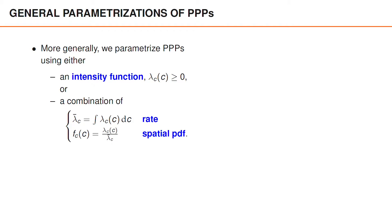From these equations, we can see that we can compute the rate and the spatial pdf from the intensity function. However, the intensity function can also be computed from the rate and the spatial pdf by multiplying the two together. It is clear from the expression of the spatial pdf that the rate then cancels out. Which of the two parametrizations that we use therefore simply depends on the task at hand and the one we happen to find more convenient.